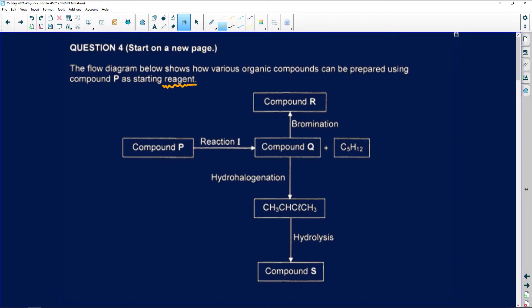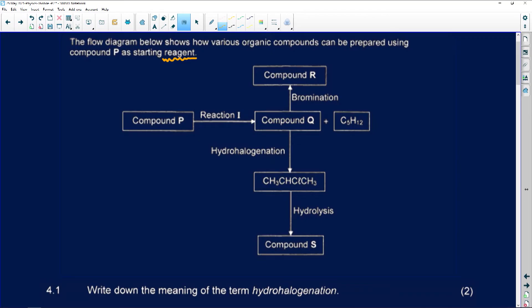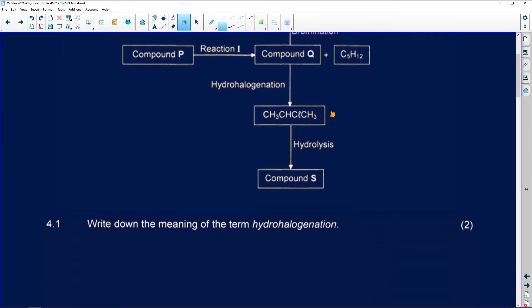Now what I always tell my children, if you're given a flow diagram like this, I would always say write everything out. It just makes it much more easier. Remember when we did question number two, when you see it you actually understand a little bit more. What I mean by this, like bromination, write your two Bs, write out C5H12, write out your hydrohalogenation, your hydrolysis, and actually draw out these structures. You will then be able to see what was added or what was then removed.